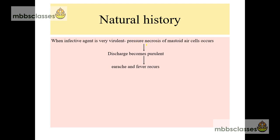Sometimes, when the infective agent is very virulent, it involves the mastoid air cell system also. There occurs pressure necrosis. When the mastoid air cells are involved, it can be identified by a change in the nature of discharge. The discharge becomes virulent and again there will be recurrence of symptoms such as earache and fever. So in cases of a virulent agent, acute otitis media can lead to mastoiditis.